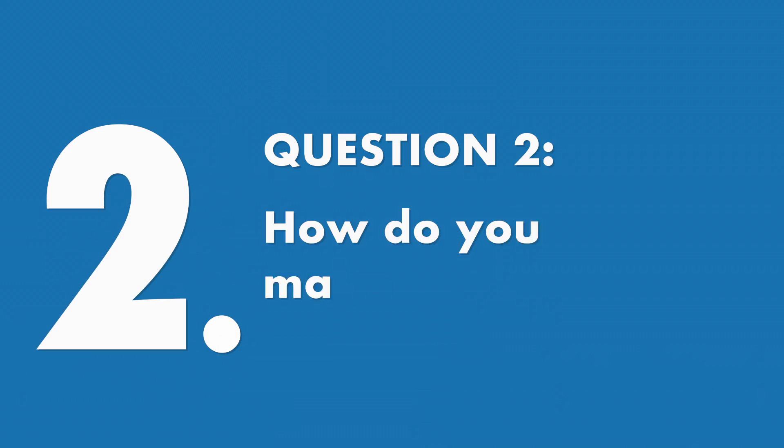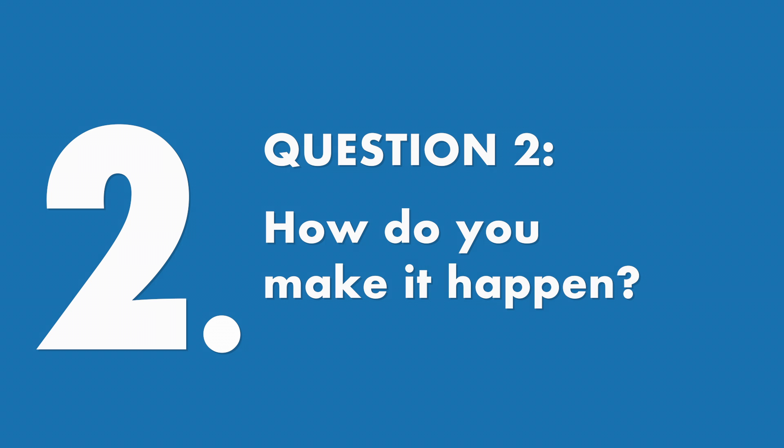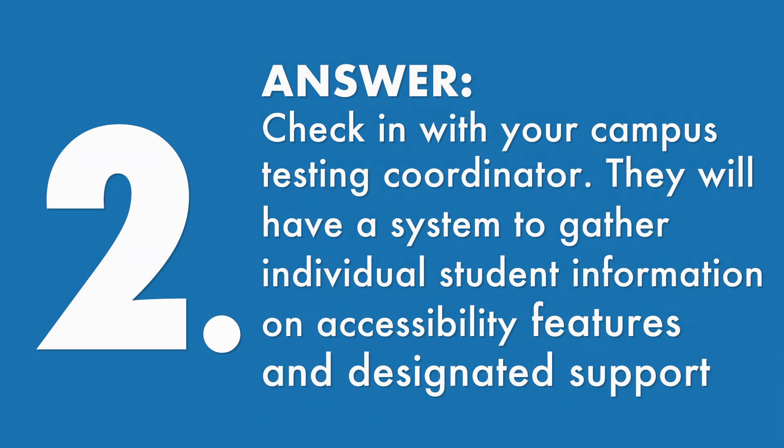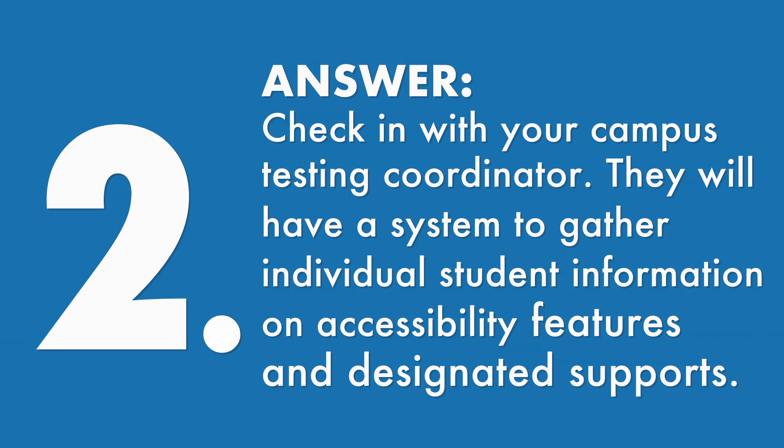Next, you wanted to know how do you make it happen? Check with your campus testing coordinator. They will have a system to gather individual student information on accessibility features and the designated supports.